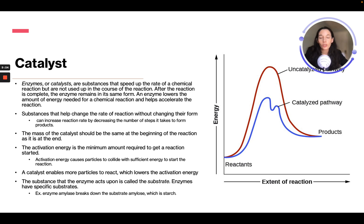Substances that help change the rate of reaction without changing their form can increase the rate by decreasing the number of steps it takes to form products. The mass of the catalyst should be the same at the beginning and the end of the reaction. The activation energy is the minimum amount required to get a reaction started, and activation energy causes particles to collide with sufficient energy to start the reaction. A catalyst enables more particles to react, which lowers the activation energy.